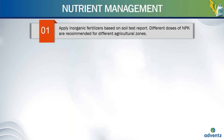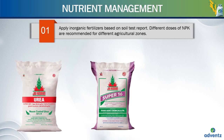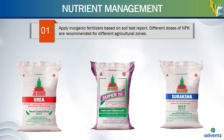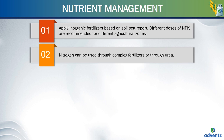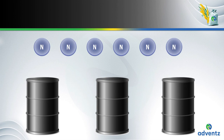Different doses of NPK are recommended for different agricultural zones. Based on the agricultural zones, we apply different doses of NPK. NPK means nitrogen, phosphorus and potassium. Nitrogen can be used through complex fertilizers or through urea. We apply nitrogen in three equal splits.